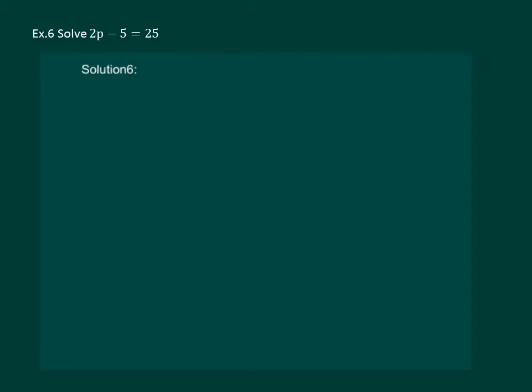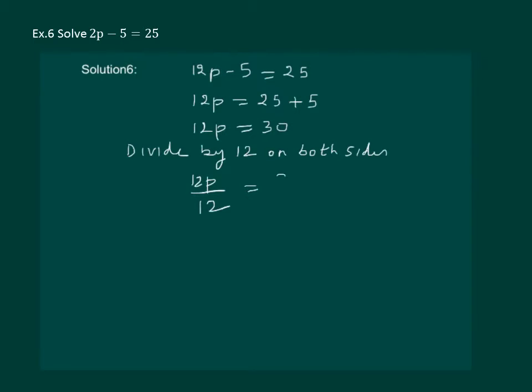Let us read the question. Solve 12p minus 5 equal to 25. So our first step would be to transpose minus 5. We get 12p equal to 25 plus 5, which is same as 12p equal to 30. Now let us divide by 12 on both sides. We get 12p by 12 equal to 30 by 12. Solving further gives us p equal to 5 by 2 as the required answer.